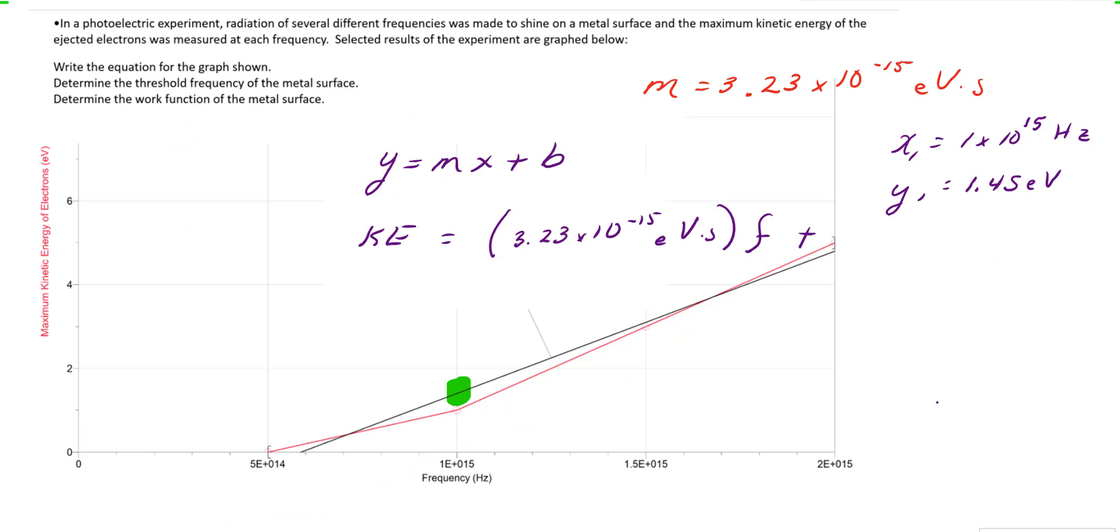To find b, I'm going to need a specific data point. So I'm going to use one I already got, the first data point that I used to calculate the slope. Once I had that value down, I'm going to take the general form, y equals mx plus b, rearrange it to solve for b, and I get b equals y minus mx. So I plug into that rearranged equation my value for y, and my value for x, and the value for slope. And I get b is equal to 1.45 electron volts minus the slope times the 1 times 10 to the 15th Hertz.